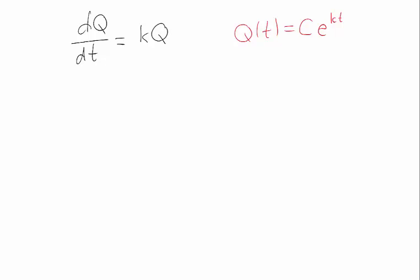The solution to this differential equation is Q(t) equals some constant C times e to the kt. We can check that this satisfies the differential equation. If I differentiate it, the constant hangs out, the derivative of e to the x is e to the x, but this is a chain rule. I have to chain.